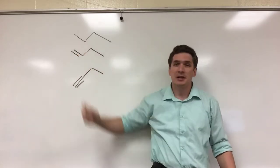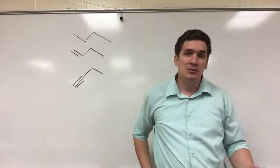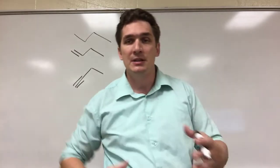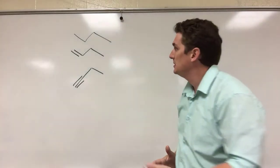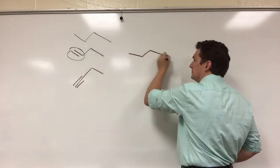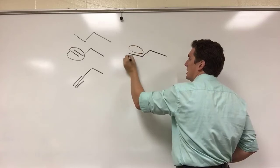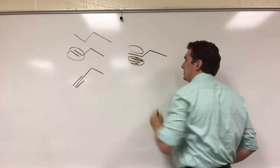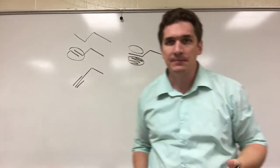So here I have butane and then here I have 1-butene. And the butene has a higher boiling point because these pi bonds on the double bond, if we were to draw them, end up sticking out above and below the plane of the alkene.